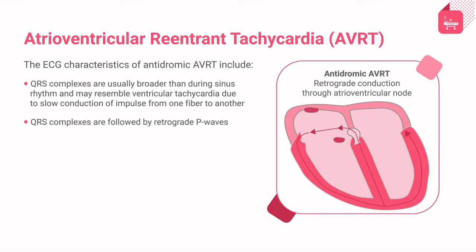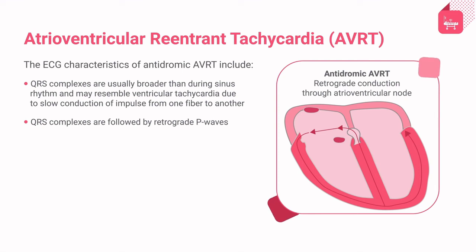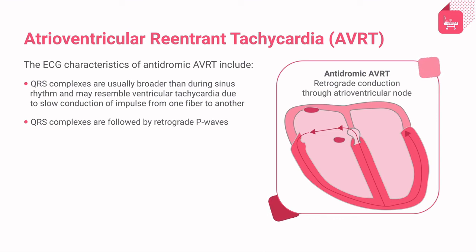Antidromic AVRT occurs when the impulse is conducted anterograde down the accessory pathway. Ventricular activation occurs through the accessory pathway rather than the normal His-Purkinje system; therefore wide and abnormal QRS complexes — not having typical right or left bundle branch block morphology — are associated with antidromic AVRT. The QRS complexes resemble pre-excited complexes seen during sinus rhythm. ECG characteristics include QRS complexes that are usually broader than during sinus rhythm and may resemble ventricular tachycardia due to slow fiber-to-fiber conduction, followed by retrograde P waves.